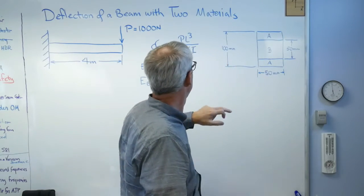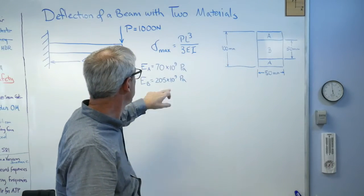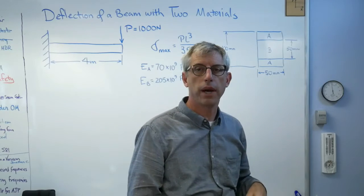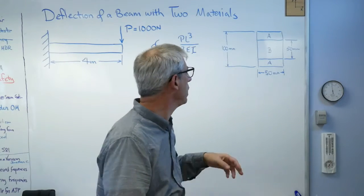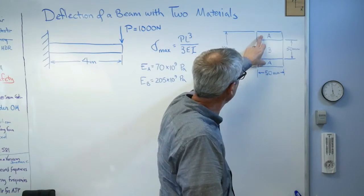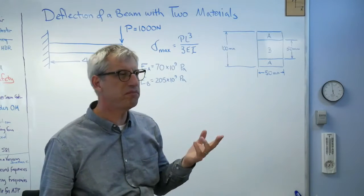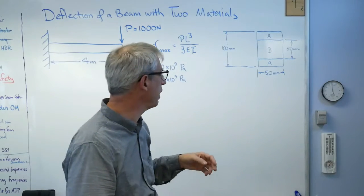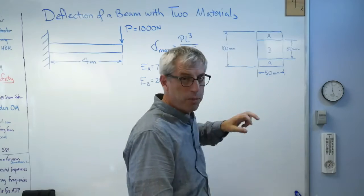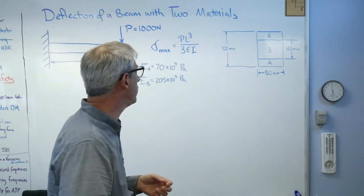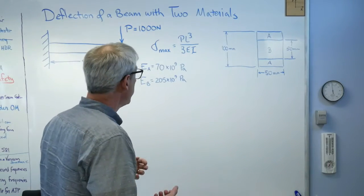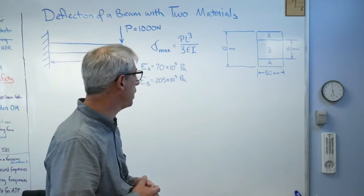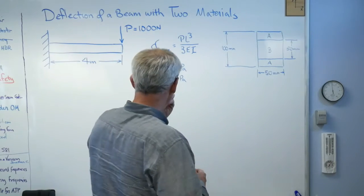And in the middle B got an elastic modulus of 205 gigapascals. Now, would we really make a beam that's got a steel center and then aluminum caps? Maybe not. I'm having a hard time thinking of why you would do that. But it's representative of an awful lot of other kinds of cases where we really would do that. So this is a pretty good thing to study.